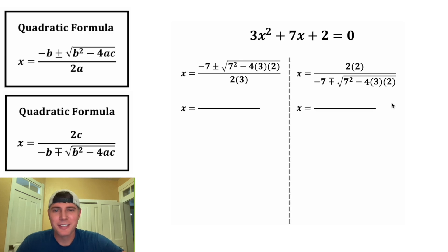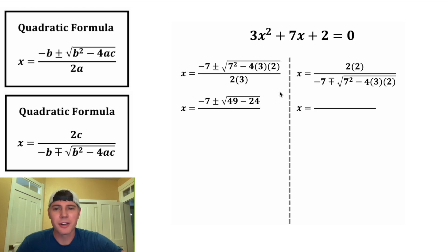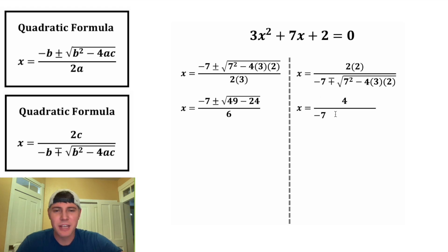And now let's simplify these. Let's bring down the negative 7, and we have plus or minus the square root. 7 squared is equal to 49, and then we're going to subtract 4 times 3 times 2, which is equal to 24. And on the bottom, 2 times 3 is equal to 6. And over here, 2 times 2 is equal to 4.